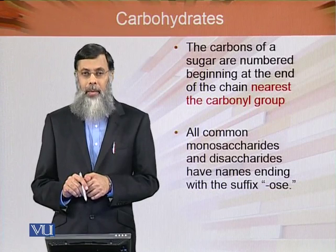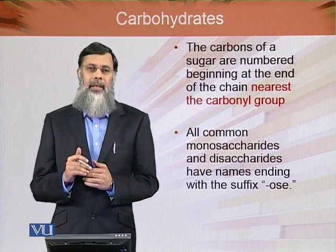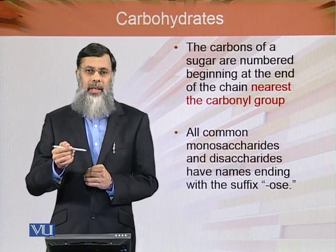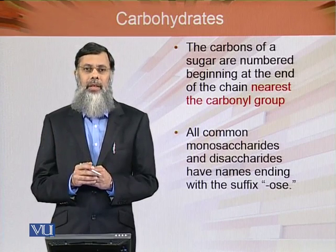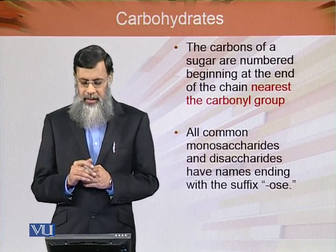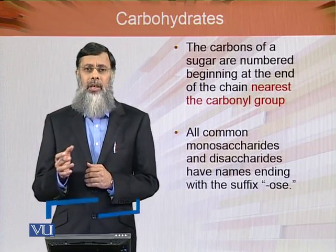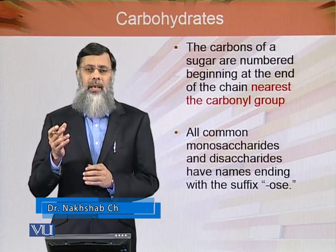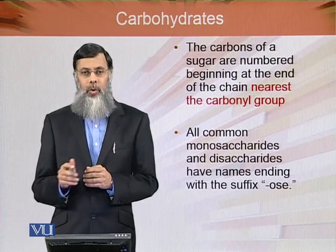The carbons of a sugar are numbered beginning at the end of the chain nearest the carbonyl group — this is the system of numbering carbon atoms. All monosaccharides and disaccharides have names ending with the suffix '-ose,' but this is not a strict generalization. There are exceptions; for example, glyceraldehyde is an aldose monosaccharide but does not end in '-ose.'